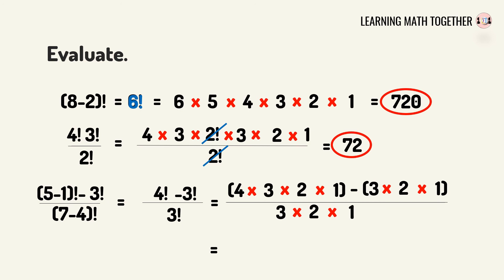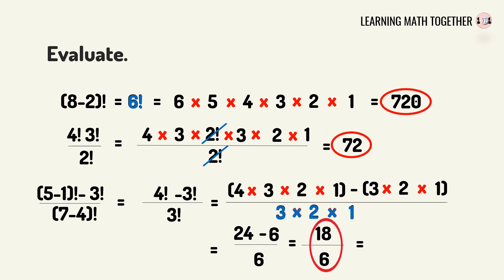Now we simplify. Multiplying 4 times 3 times 2 times 1 gives 24, and 3 times 2 times 1 gives 6. The denominator is also 6. So we have 24 minus 6 in the numerator, which equals 18, divided by 6. Dividing 18 by 6 gives us 3, and that is the final answer.